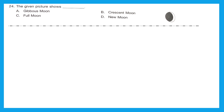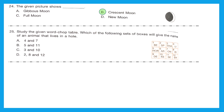Question 24: the given picture shows which type of moon? Is it gibbous, crescent, full moon, or new moon? The right answer is option B, crescent moon.